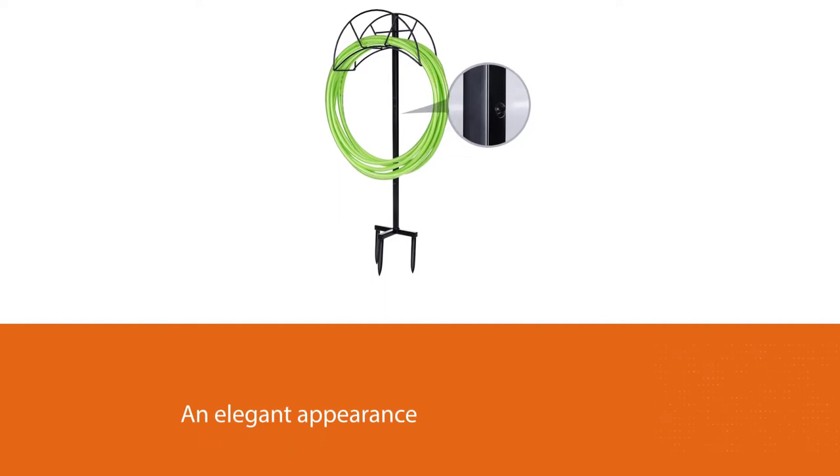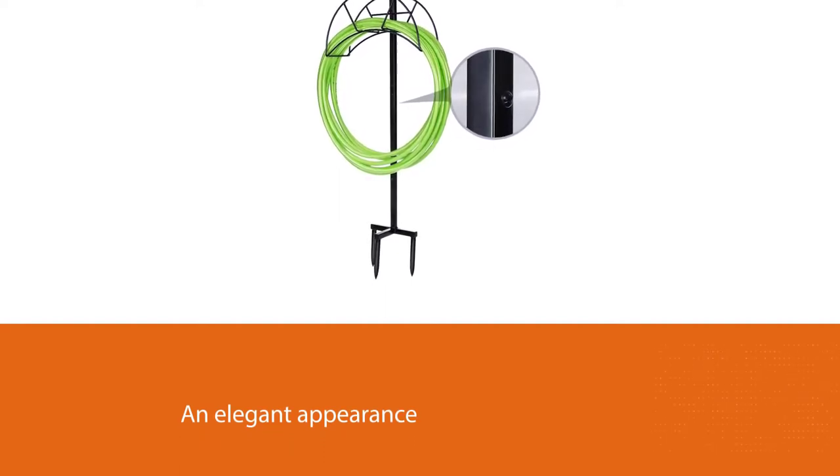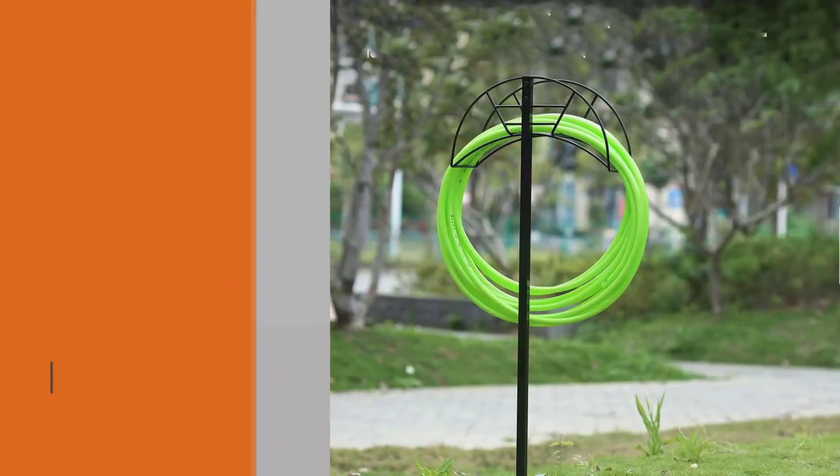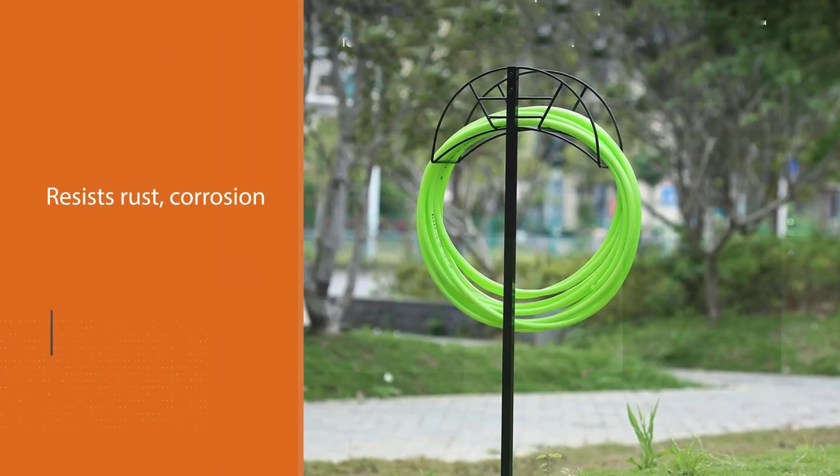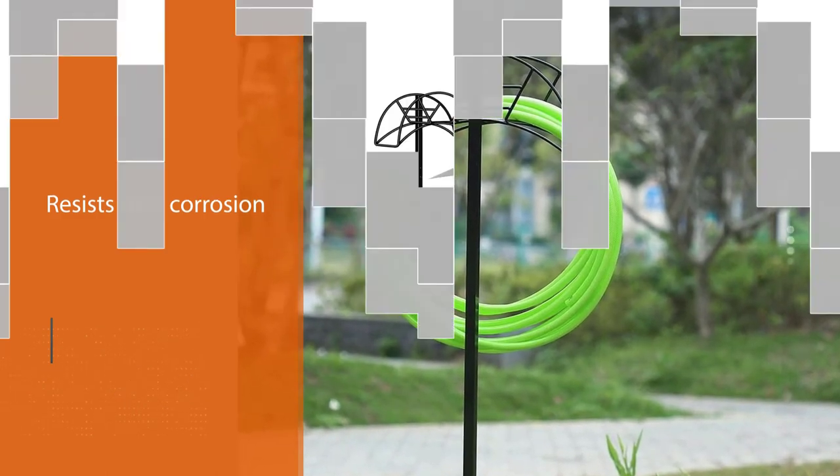Though it boasts an elegant appearance, the Tom Care garden hose holder is tougher than it looks. It resists rust, corrosion, and weather damage year-round and is designed to last for several years. Plus, it can be easily removed and stored elsewhere during the winter.